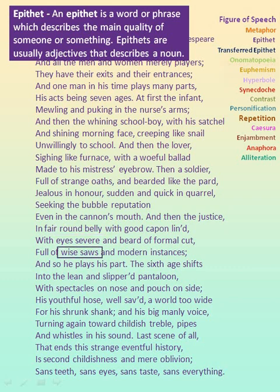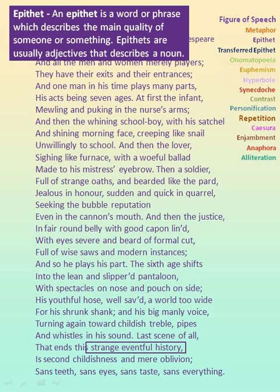'Wise saws' — saws here refers to old sayings which are wise. Hence, epithet. 'And modern instances' — instances are the examples which are of the modern age; it is described using the word modern. The figure of speech is epithet. 'Shrunk shank' — shank refers to the leg, but here it refers to the man's leg which has shrunk, so shank is described using the word shrunk. Hence, epithet. 'Strange eventful history' — the life of the man, that is his history, is described using the words strange and eventful. Hence, it is epithet.